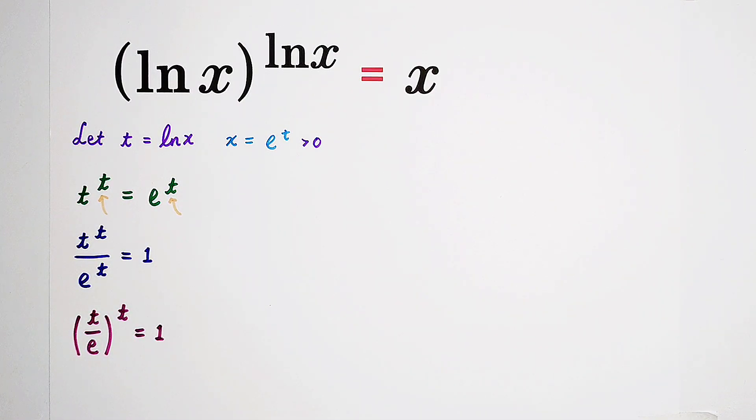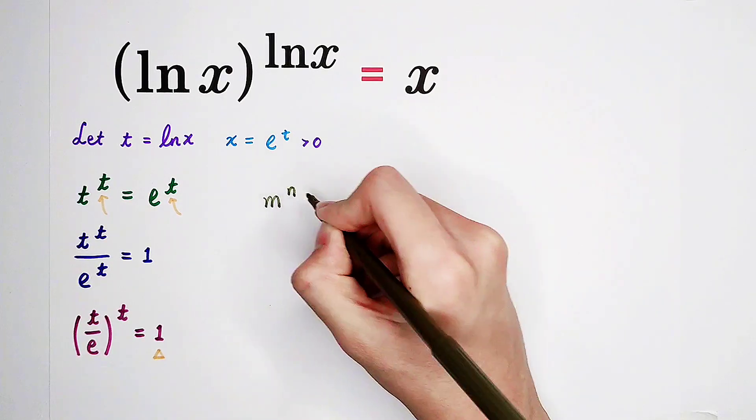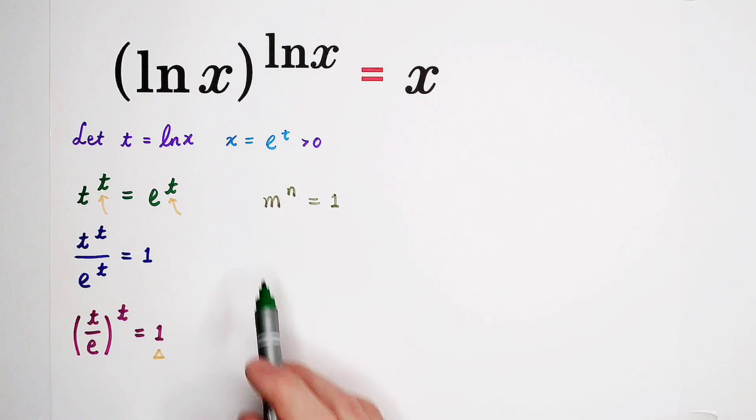Now have a good look at this equation. The left hand side has an exponential form, and the right hand side is 1. This 1 is very important. This equation has actually the form of m to the power of n equals 1. In general, there are three cases.